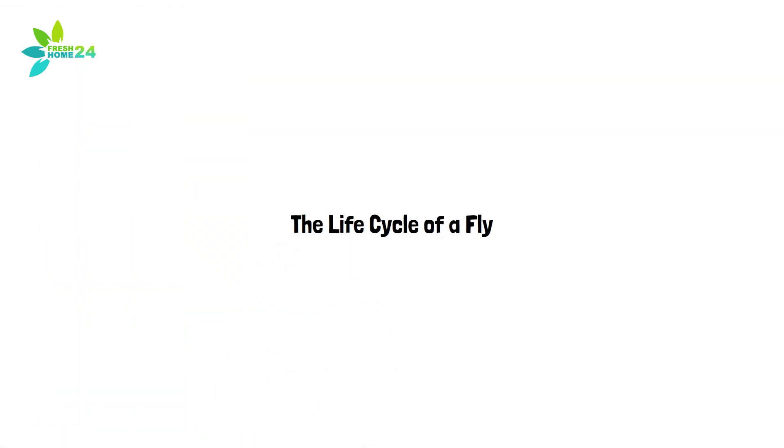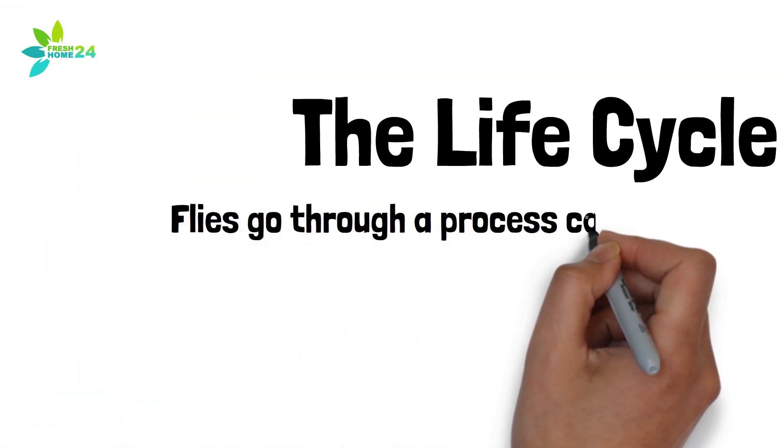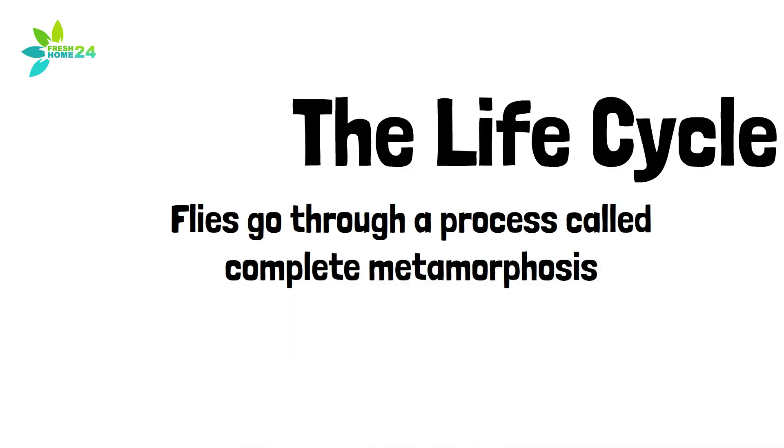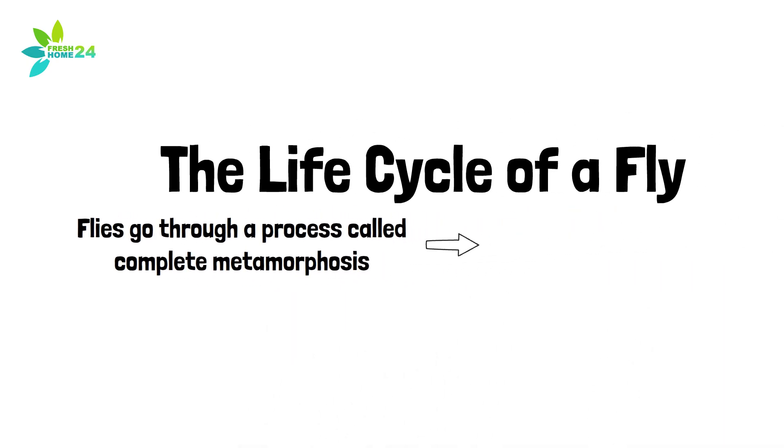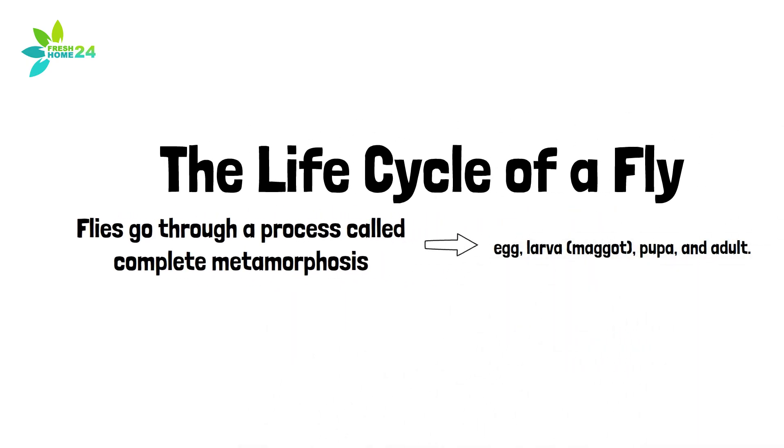The Life Cycle of a Fly. Flies go through a process called complete metamorphosis, meaning they develop in four distinct stages: Egg, larva (maggot), pupa, and adult.